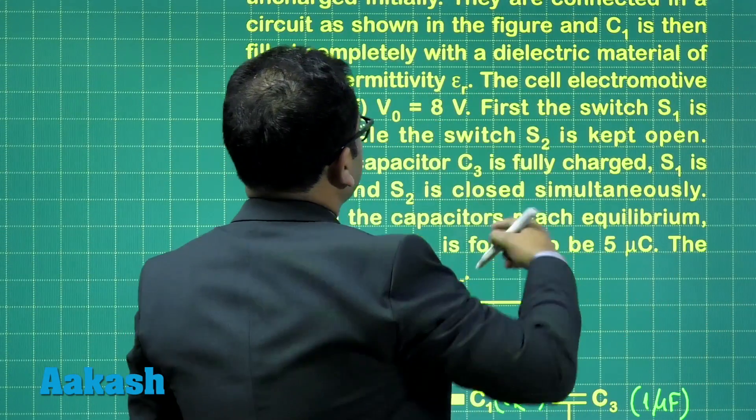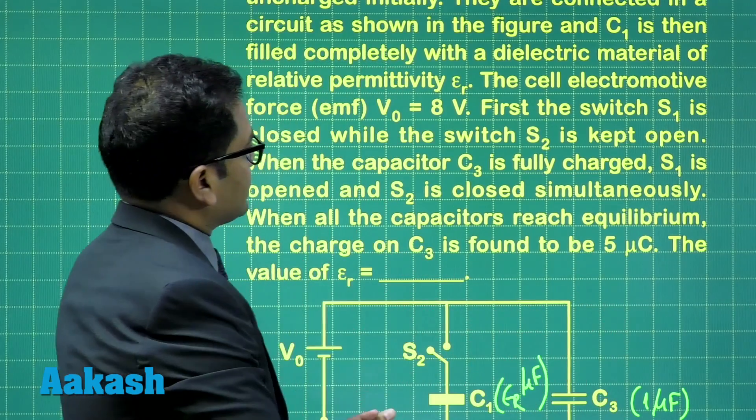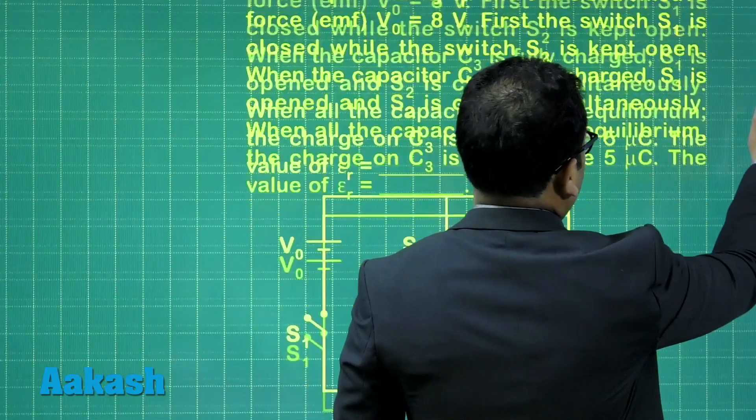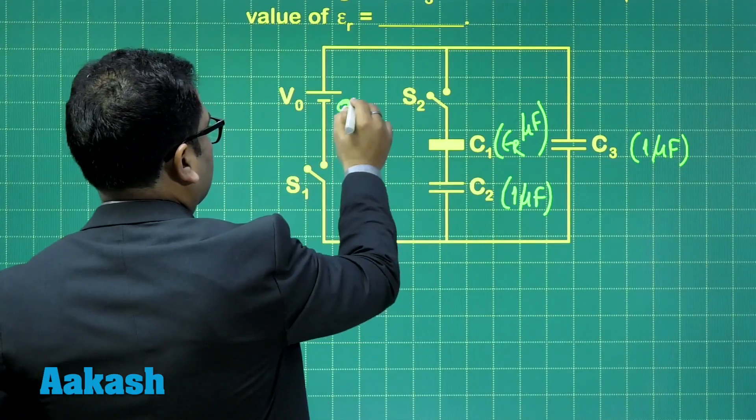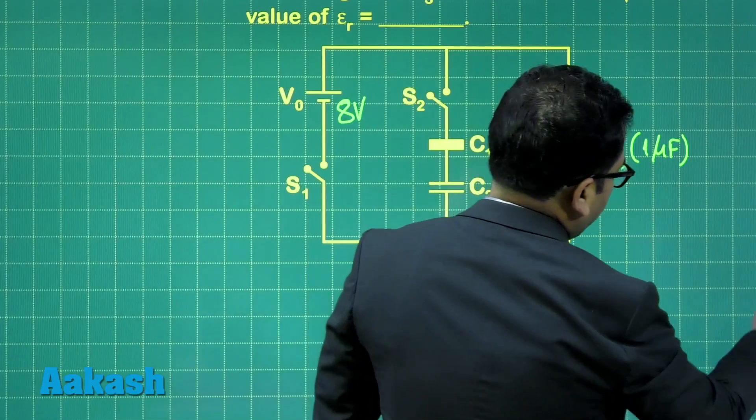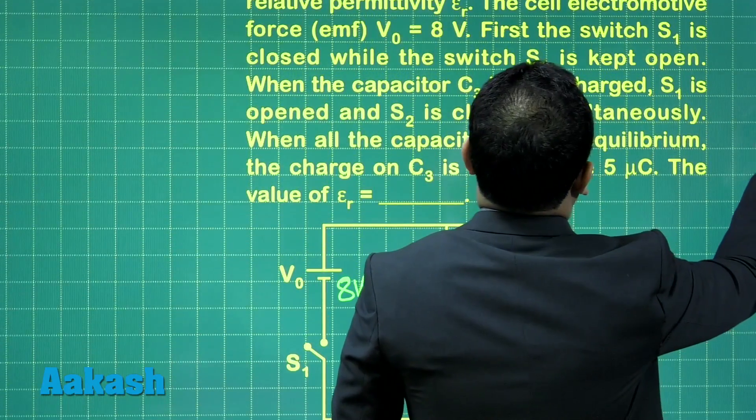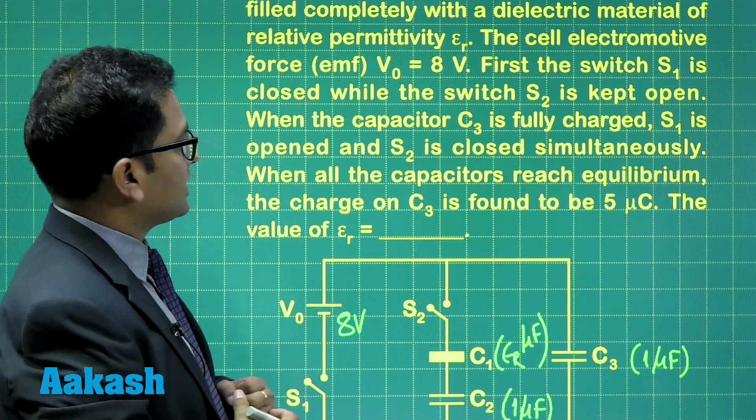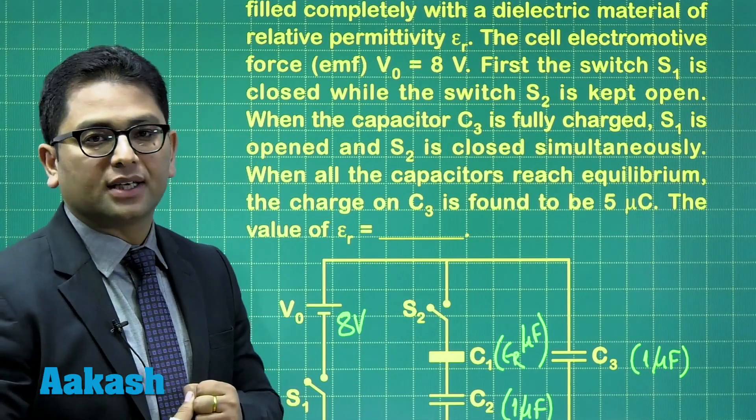And C1 is then filled completely with a dielectric. That's done. The cell electromotive force is 8 volt. So that has been done here. This given value is 8 volt. Now let's see. First, the switch S1 is closed while switch S2 is kept open.